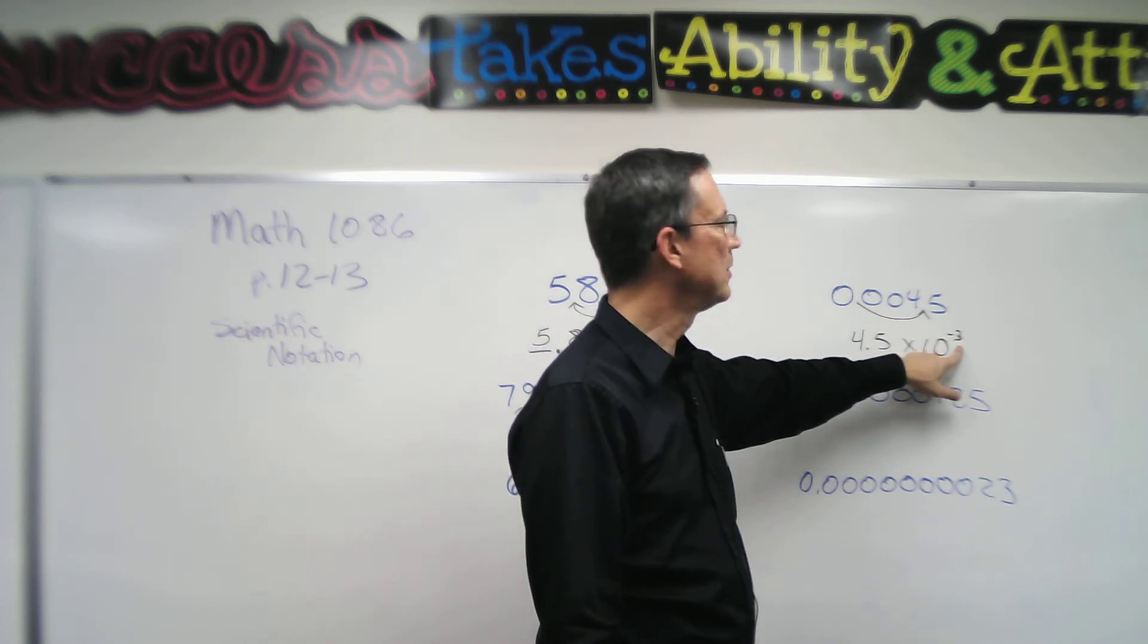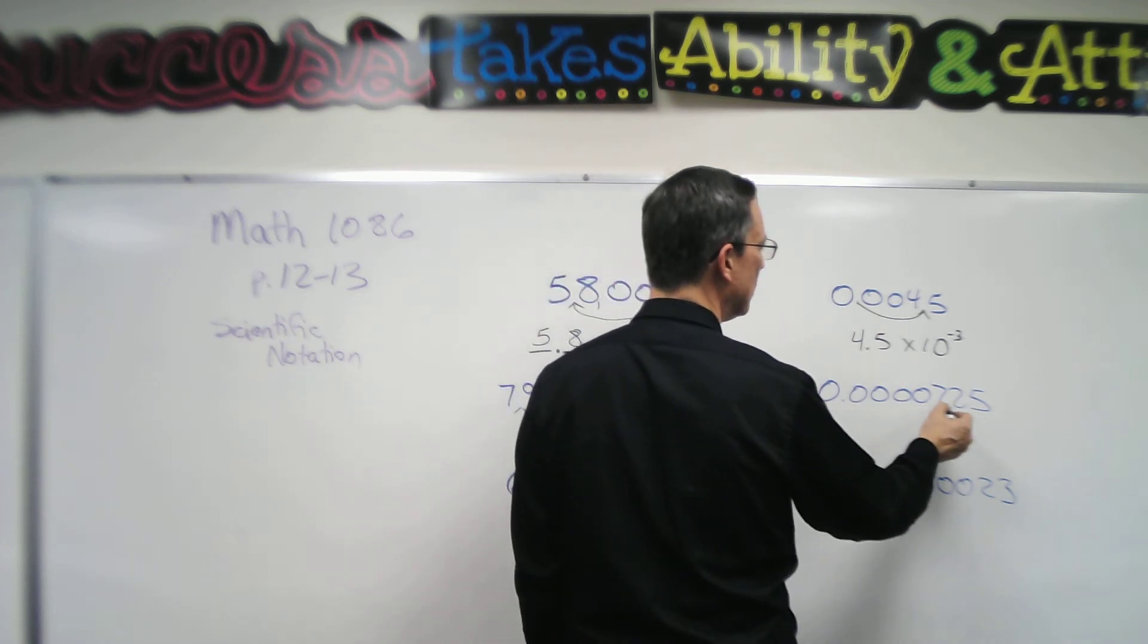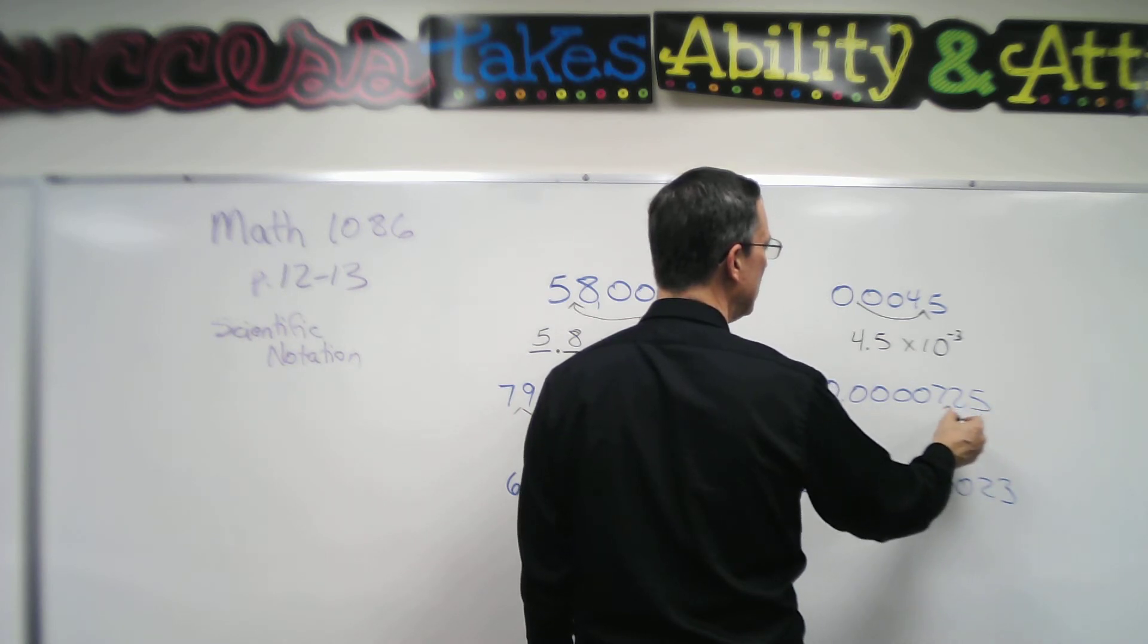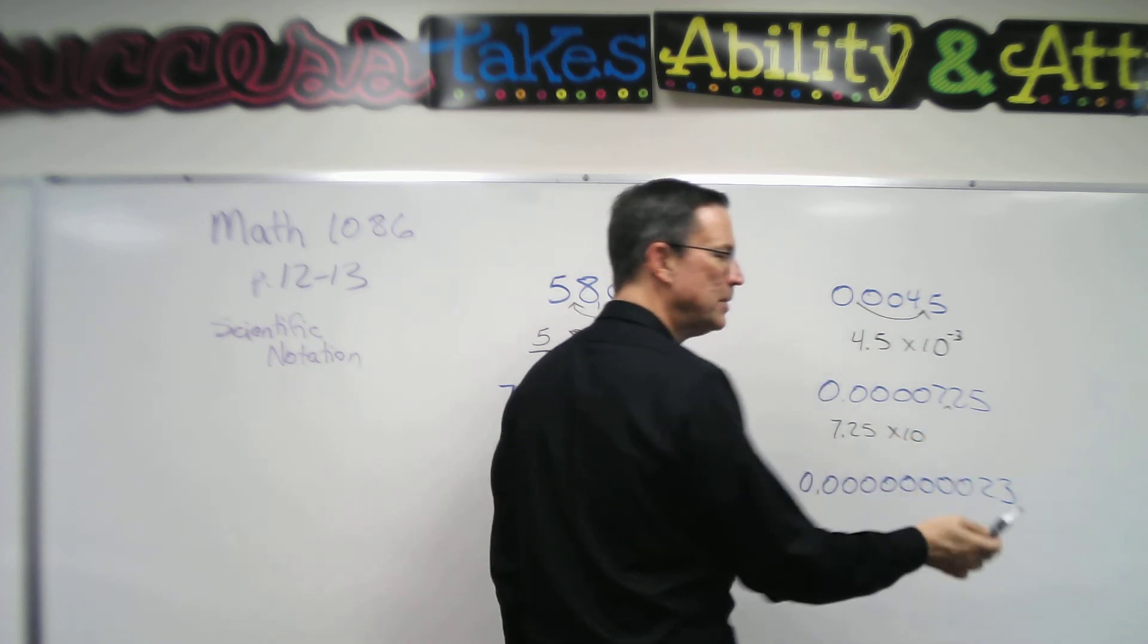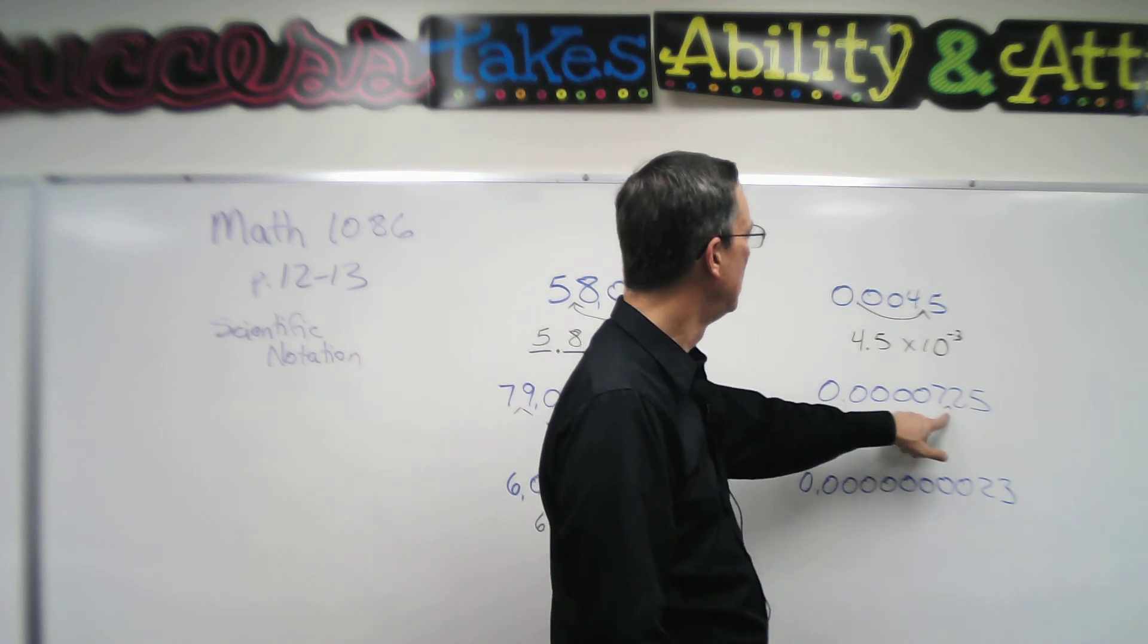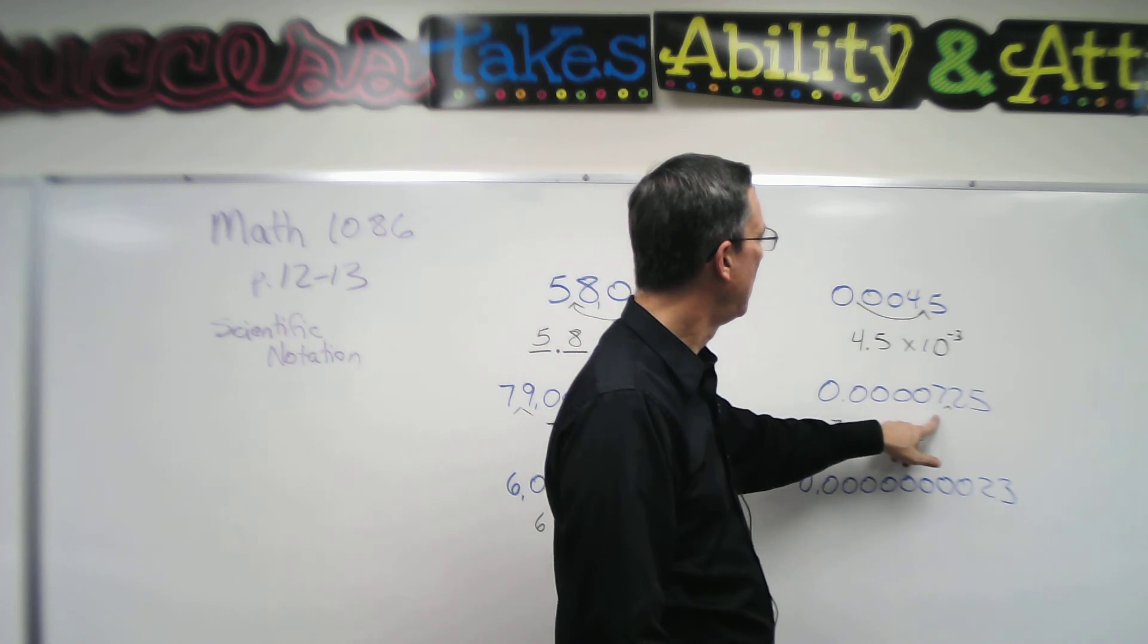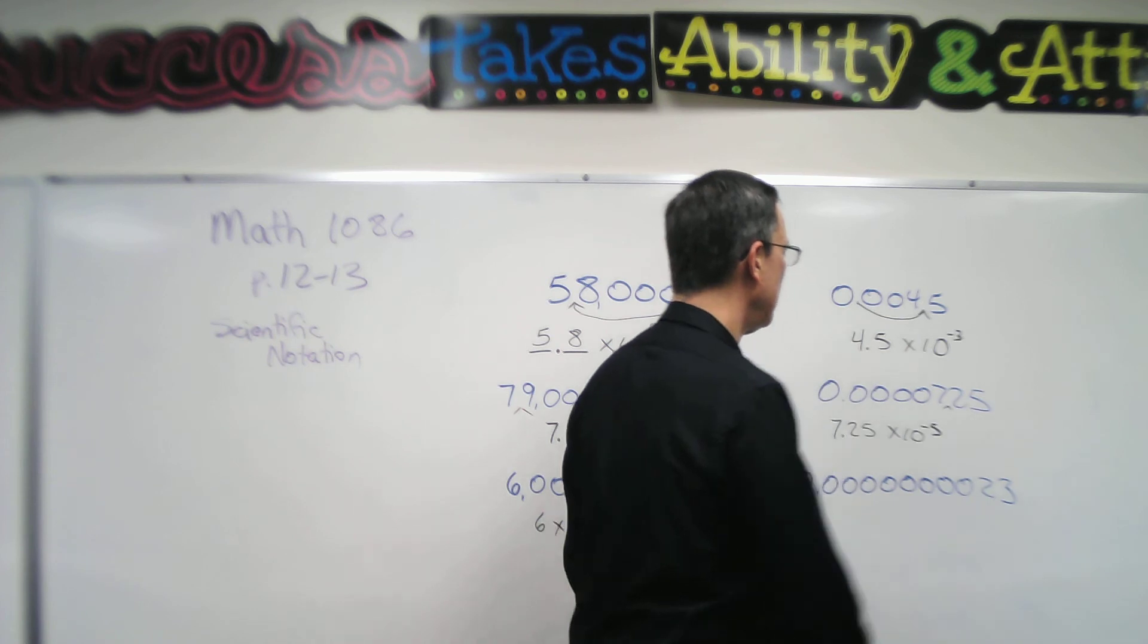Those are the only two options, so I have to memorize it and keep it straight. For this one, the decimal is going to go where do you think? Between here and here? At the end? No, it's going to go right here after the seven. 7.25. Now we always tack on the times ten, and now we have to count. How many places do I move the decimal to get it there? One, two, three, four, five places, so a negative five.